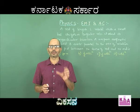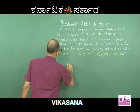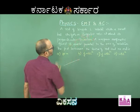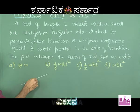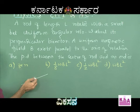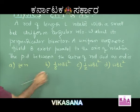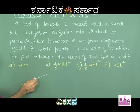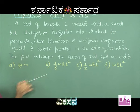We are supposed to integrate and write the total EMF between the ends of the rod. The rod of length L rotates with uniform angular velocity omega about its perpendicular bisector. The bisecting point is where the axis passes — perpendicular to the length of the rod. A uniform magnetic field B exists parallel to this axis of rotation, which we consider perpendicular to the board and perpendicular to the length of the rod.